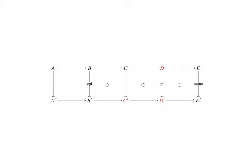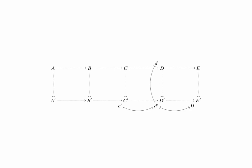Let's see how the argument goes. This time, we need to choose an element in the target group C' and show that it comes from some element back in C. Let's call the image of C' in D' little d', and following on to E', that maps to 0, because the bottom row is exact at D'. Moreover, we're given that the map from D to D' is an epimorphism, so there's some D in D mapping down to D'. Using commutativity of the far-right square, we see that D maps to some element E, which maps to 0. But we're given that the right-hand vertical map is a monomorphism, and so this new element E is actually equal to 0.